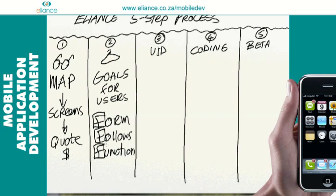You know the saying — form follows function. We look at all these roads and how they fit together and how they relate to each other. In this step we want to anticipate the questions that users are going to have and map out what those questions will be and how they will be addressed in your application. By making wireframes in this step, we ensure that every step that follows is as efficient as possible, and we immediately know if your project is going to run longer or shorter than originally anticipated.